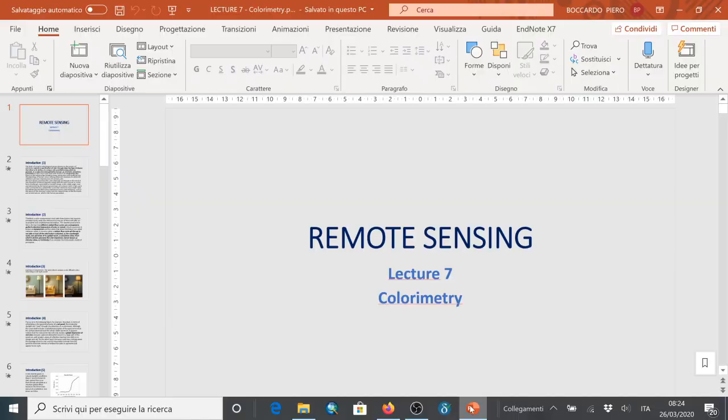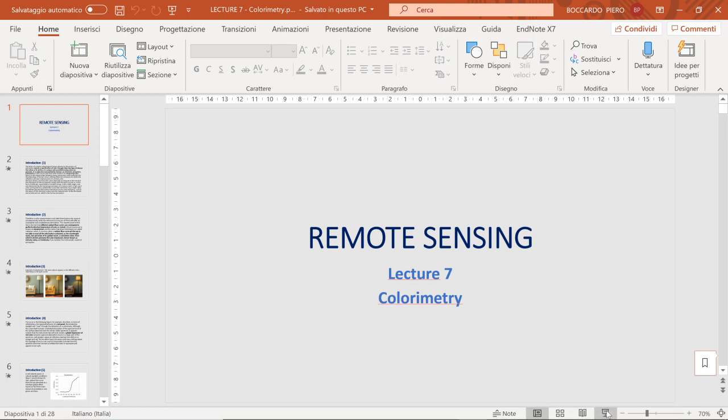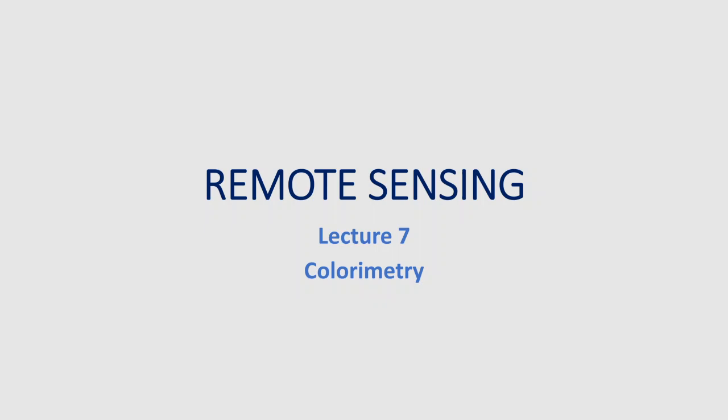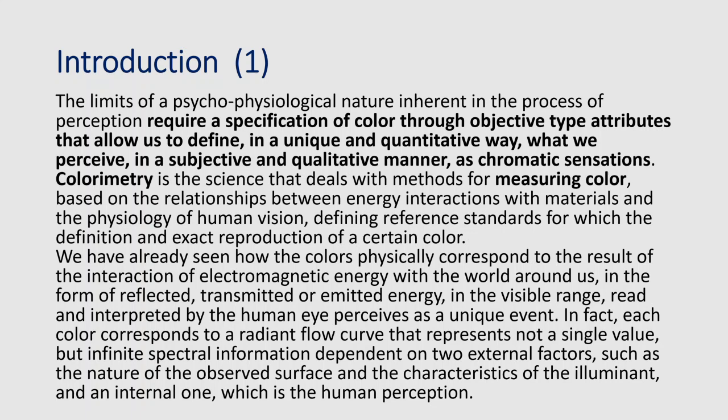Good morning everybody. Today we are going to take into consideration the second part dealing with human vision, and in particular, this lecture number seven covers colorimetry. The limits of a psychological nature inherent in the process of perception require a specification of color through objective attributes that allow us to define in a unique and quantitative way what we perceive in a subjective and qualitative manner as chromatic sensation.